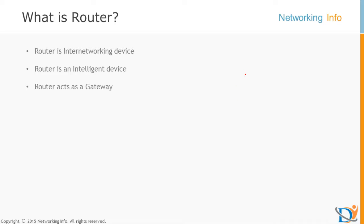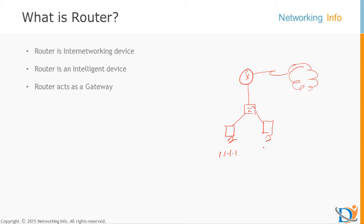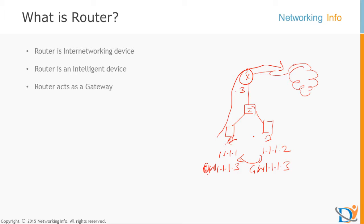Every PC in our network must have a gateway if they are going to send packets out of the network. For example, this router has two computers, both connected via a switch, and the router is connected to the ISP. This PC has IP 1.1.1.1, this PC has 1.1.1.2. If they are talking to each other internally, they can send traffic without any gateway. But if you are going to access the internet — that's outside of our network — then you require the IP address of your router, which is the gateway facing the internet, so 1.1.1.3. Both devices will have that gateway configured; otherwise your devices will not send data out of the network. The gateway is acting as an exit point here.